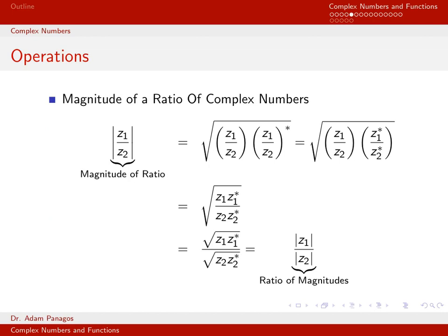Let's do a similar computation: take the magnitude of a ratio of complex numbers. So we have complex numbers z1 and z2, and we want the magnitude of z1 divided by z2. By definition, any time we take the magnitude of a complex quantity, we take the square root of whatever is inside times its complex conjugate. So I've applied that definition to this ratio.